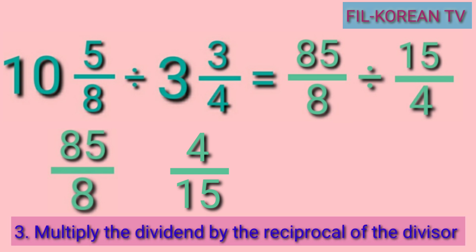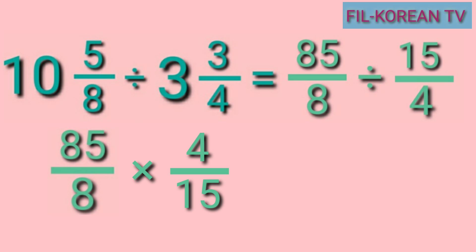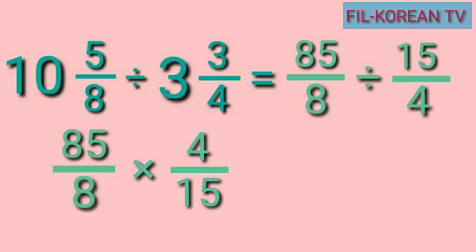The third step is to multiply the dividend by the reciprocal of the divisor. That means we need to change the division sign into a multiplication sign. We will multiply the numerators and multiply the denominators. Or we can use cancellation if possible before multiplying. In this problem, we will use the cancellation method.